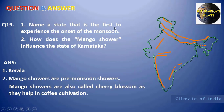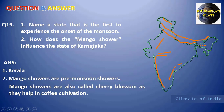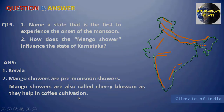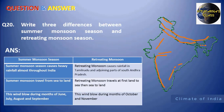Next: name the state that is first to experience the onset of monsoon — that is Kerala. How do mango showers influence Karnataka? From the name itself we can tell: mango showers help in mango ripening, and they also assist in chili blossom and coffee cultivation.